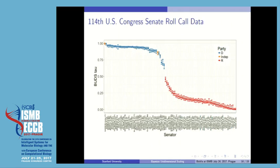To show that our method is not limited to biological data, I applied BOTS to the voting data from the U.S. Senate, which includes the binary yes-or-no votes from 500 bills. The ordering we recovered roughly correlates to the political spectrum of the senators.